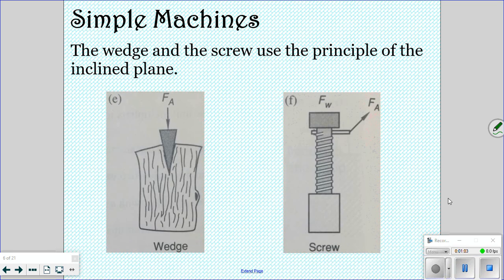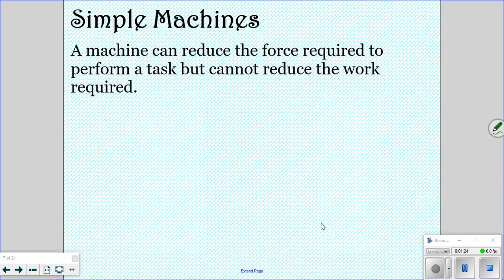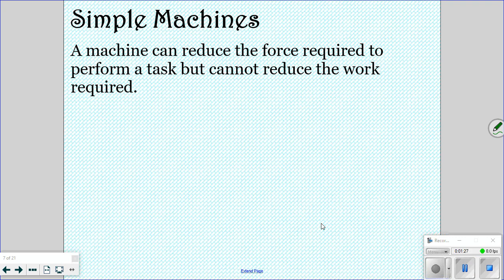The wedge and the screw use the principle of the incline plane. If you've ever looked at the end of a screw, it is a very sharp point and then it gets bigger, so that it can make it easier for you to screw something in. Machines can reduce the force that are required to perform a task, but it doesn't reduce the work that's required. It just makes it a little bit easier because you don't have to have as much force.